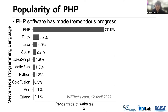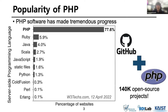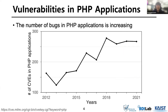PHP is a popular server-side web programming language. In 2022, about 80% of websites use PHP as a server-side language. Also, PHP open-source software has made rapid progress reaching almost 140k projects. However, with this trend, the number of vulnerabilities in PHP applications continues to increase, meaning that systematic testing of PHP applications is needed.